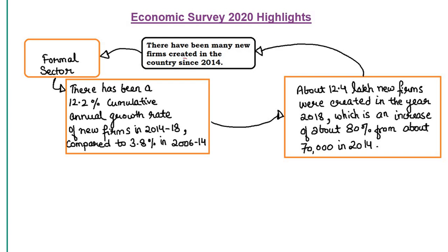India's ranking in new firm creation is third globally. In the formal sector, there has been a 12.2% cumulative annual growth rate of new firms compared to 3.8% in 2006-14. About 12.4 lakh new firms were created in 2018, compared to only 70,000 in 2014 — an 80% improvement.